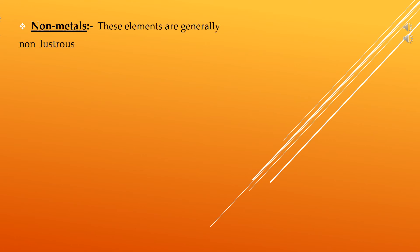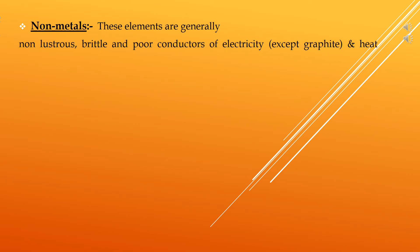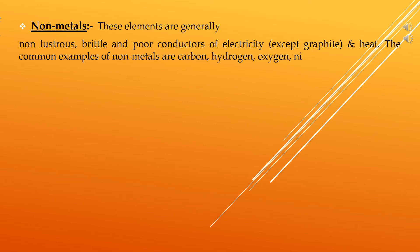The second type of elements are non-metals. These elements are generally non-lustrous, brittle, and poor conductors of electricity and heat (except graphite). Common examples of non-metals are carbon, hydrogen, oxygen, and nitrogen.